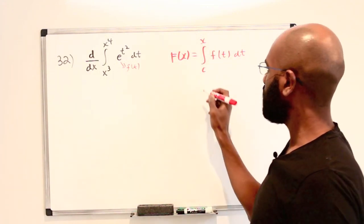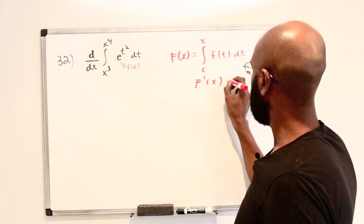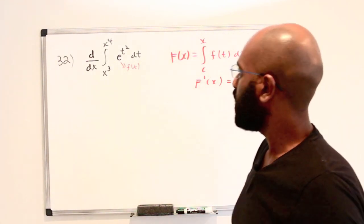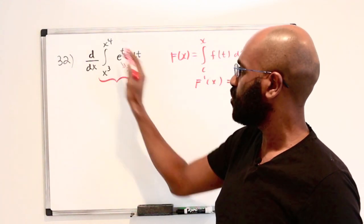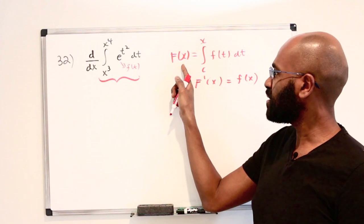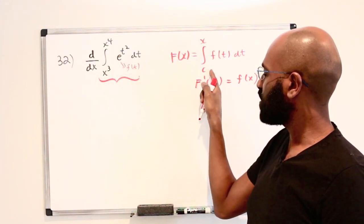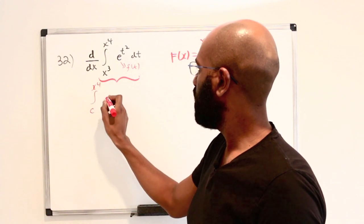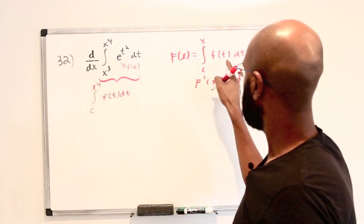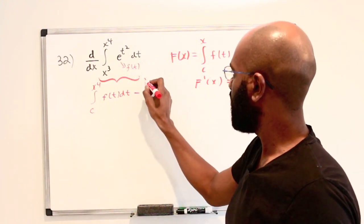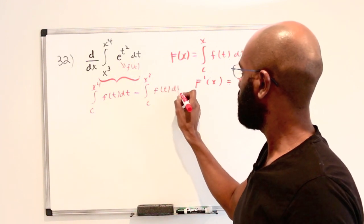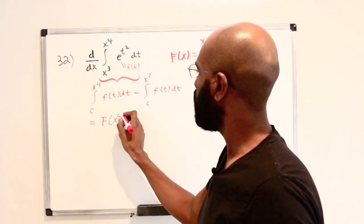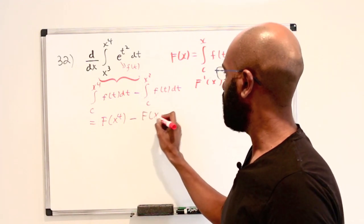If we let capital F of x be the function that evaluates the integral from this constant c to any particular value of x, then the fundamental theorem tells us that the derivative of capital F is little f of x. Now if we look at the integral from x cubed to x to the fourth, we can represent it in terms of capital F of x. We write this as a difference of integrals: the integral from c to x to the fourth of f(t) dt, minus the integral from c to x cubed of f(t) dt. That gives us capital F of x to the fourth minus capital F of x cubed.